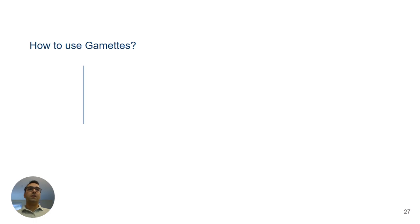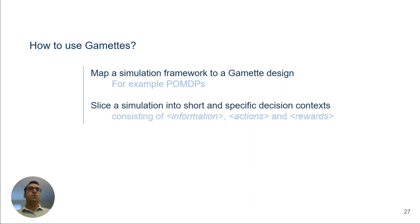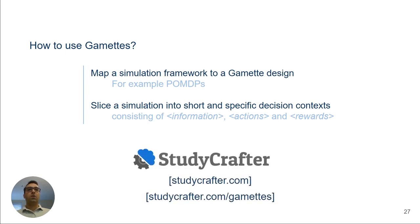Now, if you are interested in using gamettes and applying it to your research, you can do this by first finding a mapping between your simulation environment and a gamette design. In our case, we used the POMDP framework to map the gamettes to the simulation. Next, you need to slice your simulation into a short and specific decision context that consists of the elements of your mapping, for example, the information, actions, and rewards. For creating gamettes, you can use StudyCrafter, the same as we did, or any other tools that you are comfortable with. You can also check out studycrafter.com/gamettes for updates about the gamettes and learning about our future studies.